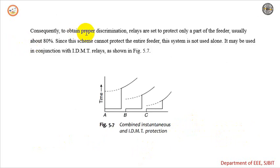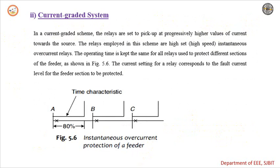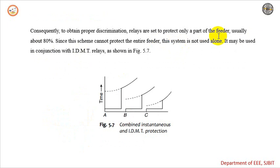To obtain proper discrimination, the relays are set to protect only a part of the feeder — typically 80%, as seen in the figure. So only 80% of each section is protected with the help of instantaneous overcurrent relays, and the remaining 20% is protected with IDMT relays. Therefore, this current graded scheme cannot be used alone; it must be used in conjunction with IDMT relays.